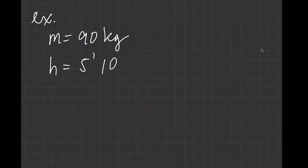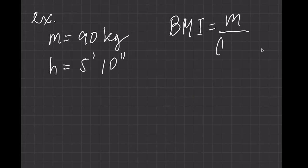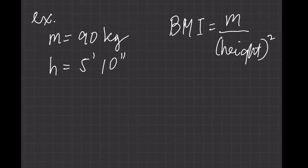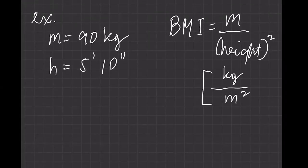My height is 5 feet 10 inches. The BMI is in units of kilograms per meter squared, and the formula is BMI equals mass divided by height squared. So we need to know both mass and height.